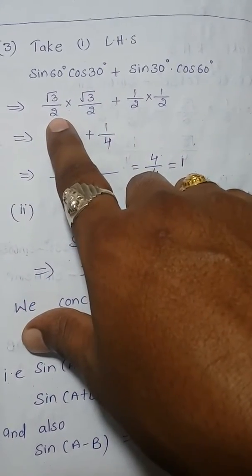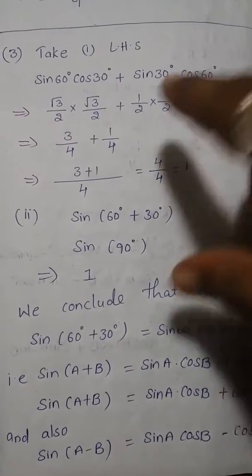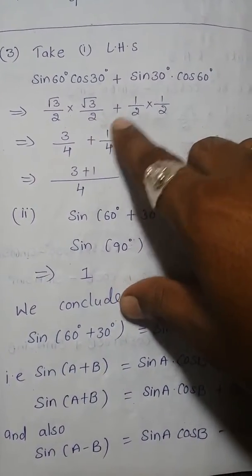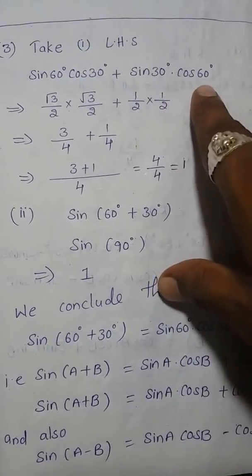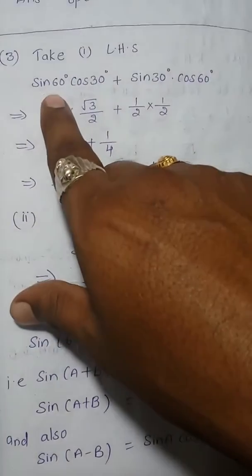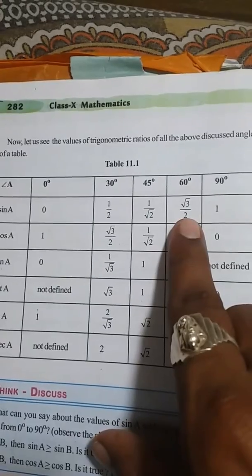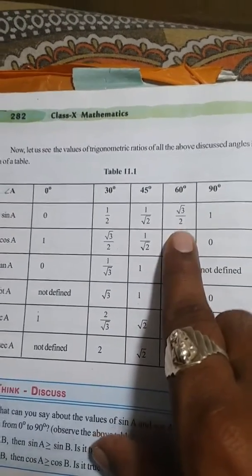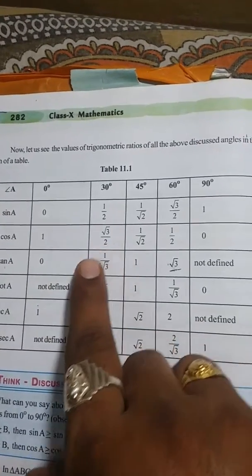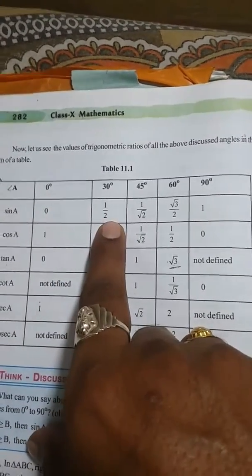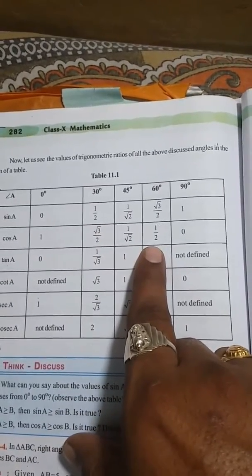From the table, sin60 is root 3 by 2, cos30 is root 3 by 2, sin30 is 1 by 2, and cos60 is 1 by 2. Substituting all values from the table: sin60 = √3/2, cos30 = √3/2, sin30 = 1/2, cos60 = 1/2.